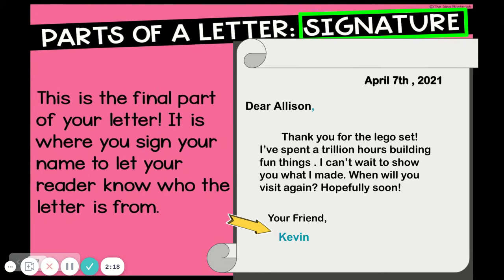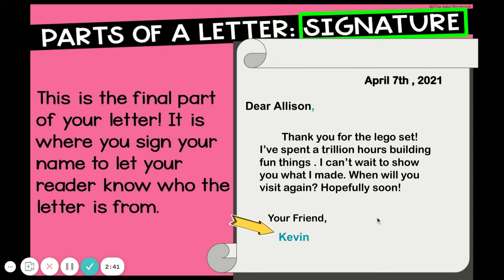At the very end of your letter you add your signature. This is the final part of your letter — it is where you sign your name to let your reader know who the letter is from. You write your name in print. If you know how to write in script, like many grown-ups do, you can add that as well. And this is the end of a letter: date, greeting, body, closing, and signature.